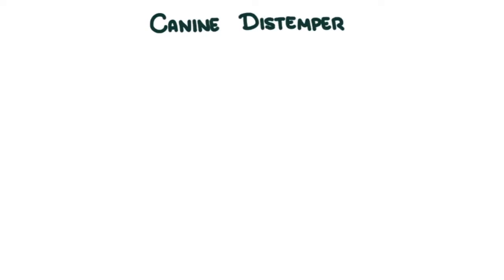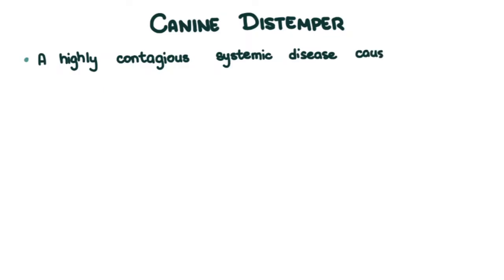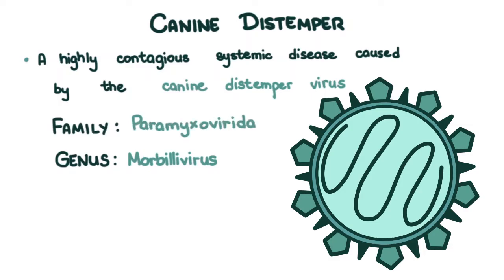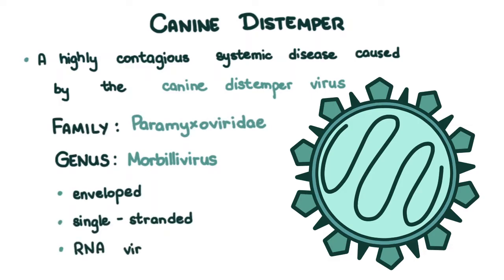Canine distemper is a highly contagious systemic disease caused by the canine distemper virus of the genus Morbillivirus, in the family Paramyxoviridae. It is an enveloped, single-stranded RNA virus.